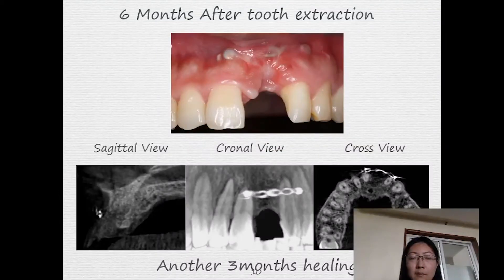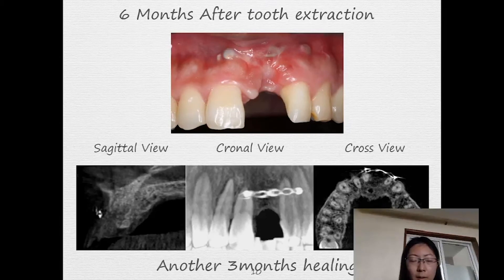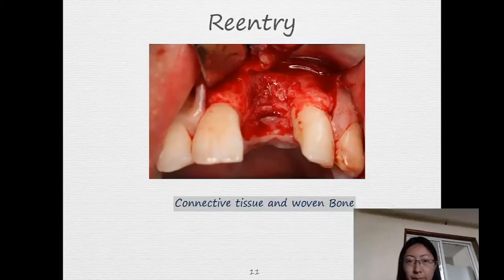This is six months after tooth extraction. From another CBCT analysis, we can see the medium density of tissue here, which is under the micro titanium plate — it is woven bone or connective tissue. To allow better mineralization, I let the patient heal for another three months. At re-entry, we can see the connective tissue and woven bone.